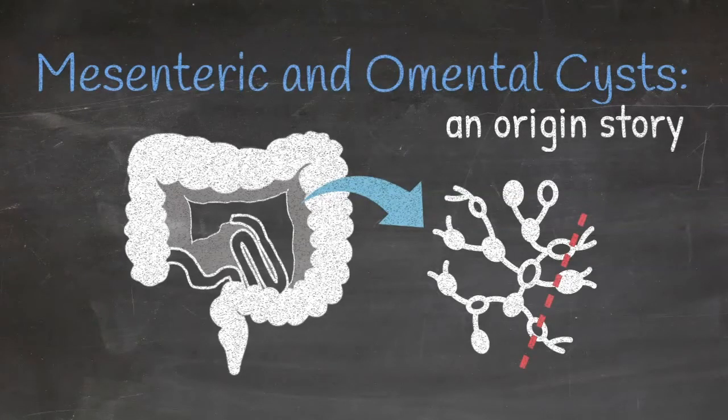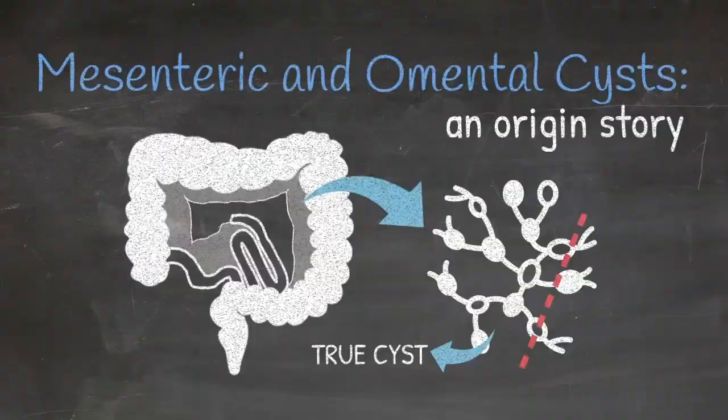Mesenteric cysts and omental cysts are actually true cysts, meaning that they have an epithelial lining, as opposed to pseudocysts, which do not.